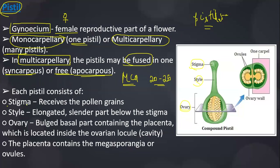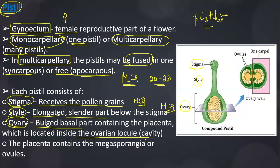Each pistil consists of three main parts: stigma, style and ovary. The stigma receives the pollen grain. The style is the elongated, slender part below the stigma. The ovary is the bulged basal part containing the placenta, which is located inside the ovarian locule or cavity. The placenta contains the megasporangia or ovules. Ovules are the female gamete. The embryo sac is the female gametophyte.